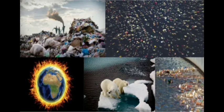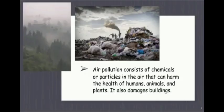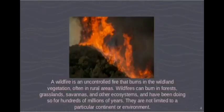Overconsumption, overfishing, and deforestation are all having a significant impact on our world. Air pollution consists of chemicals or particles in the air that can harm the health of humans, animals, and plants, and also damages buildings. People do not have access to safe drinking water, as humanity is constantly polluting essential resources such as air, water, and soil, which take millions of years to replenish. A wildfire is an uncontrolled fire that burns in wildland vegetation — in forests, grasslands, savannas, and other ecosystems — and has been occurring for hundreds of millions of years.